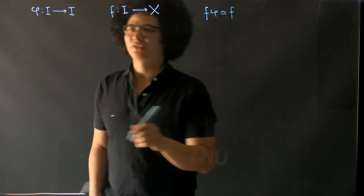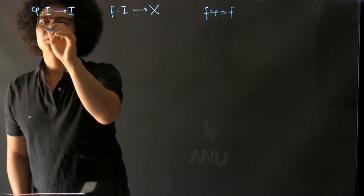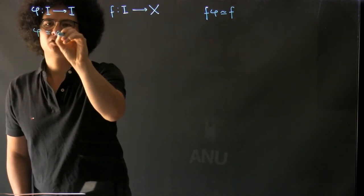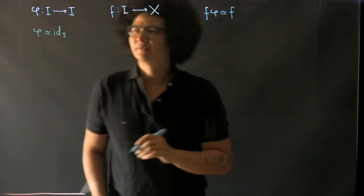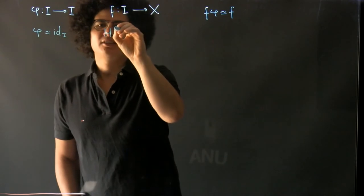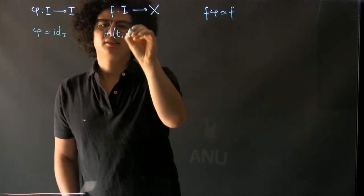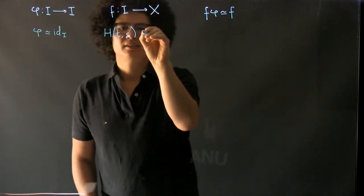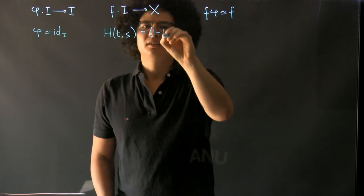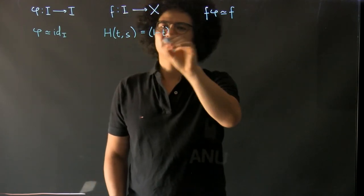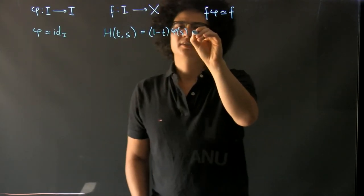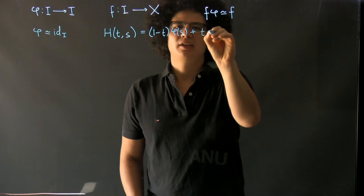And we do that as follows. So first what we do is we build a homotopy from φ and show that that's homotopic to the identity on the interval. And so we do that by H(t,s) equals, and now we do a linear homotopy from φ(s) to s.